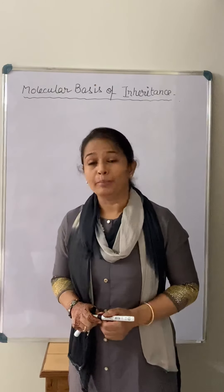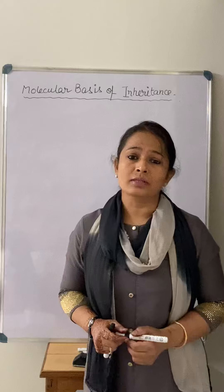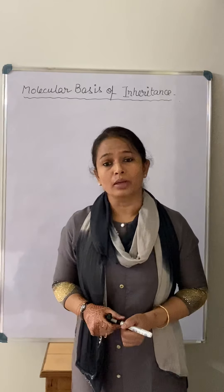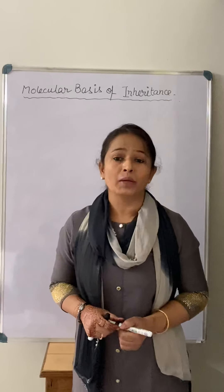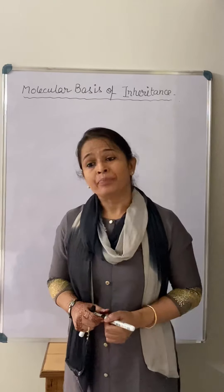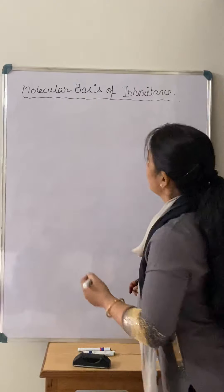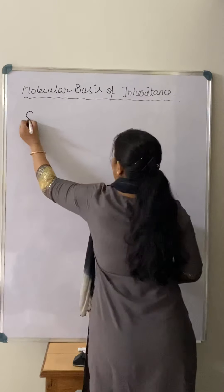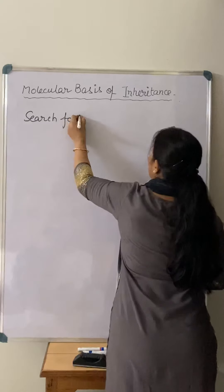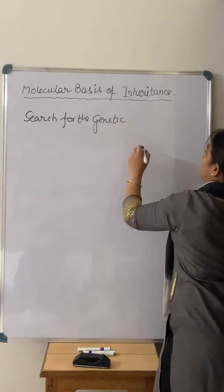Today we are going to discuss how scientists came to know that DNA is the genetic material. There were certain experiments by which they confirmed that DNA is the best genetic material. This topic is called 'Search for the Genetic Material.'